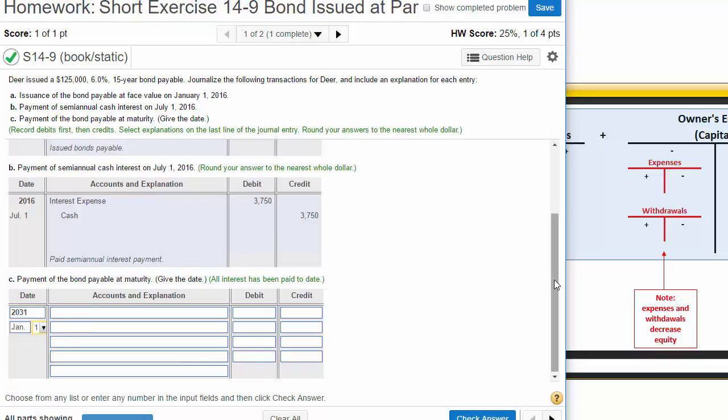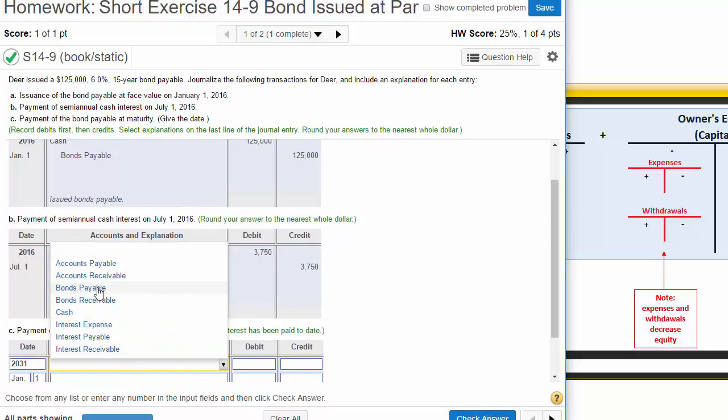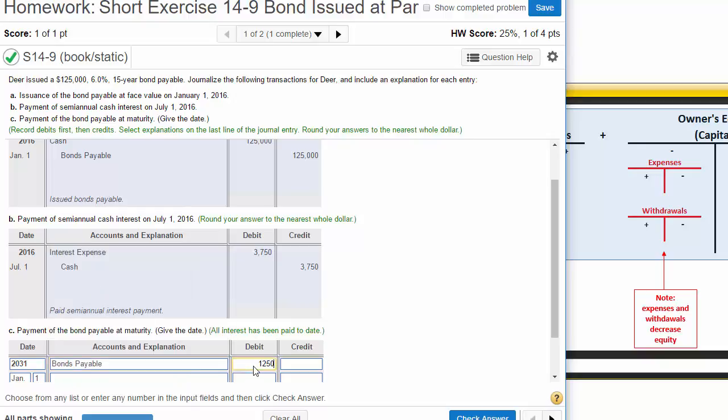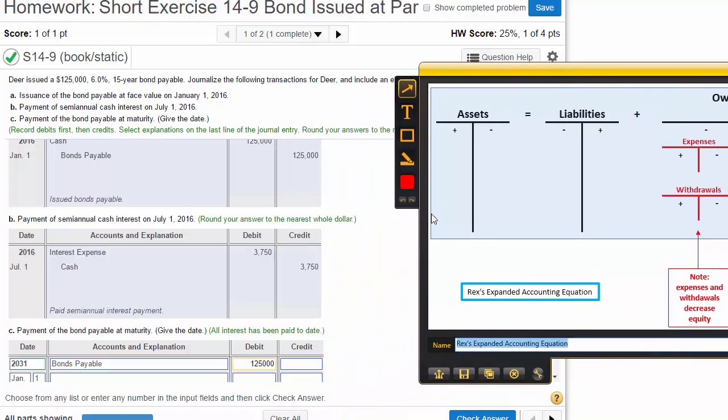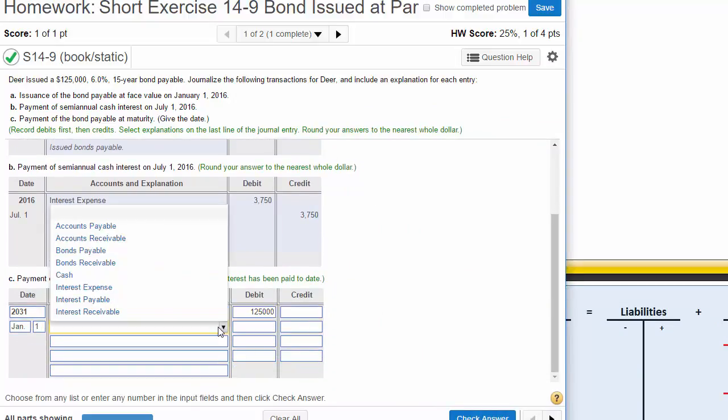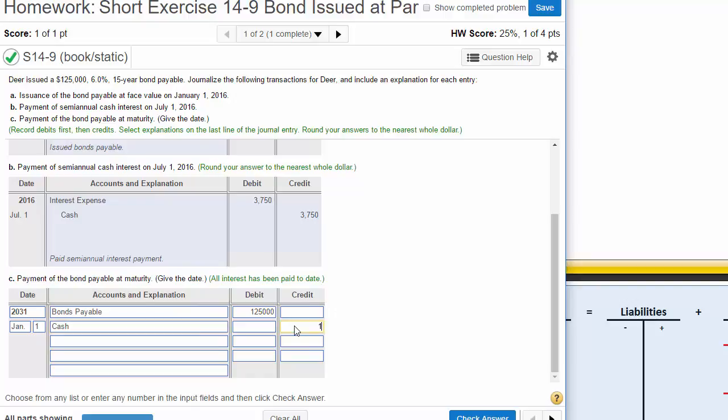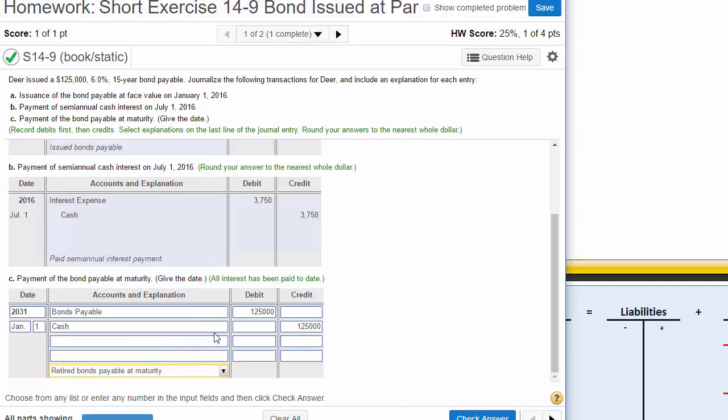We need to get rid of the bonds payable. We are debiting bonds payable because we're paying off the bonds and getting rid of the debt. A liability, bonds payable, goes down with a debit. Now we need to pay cash in the amount of the par value to retire our bonds. These bonds would be retired and would no longer pay interest.